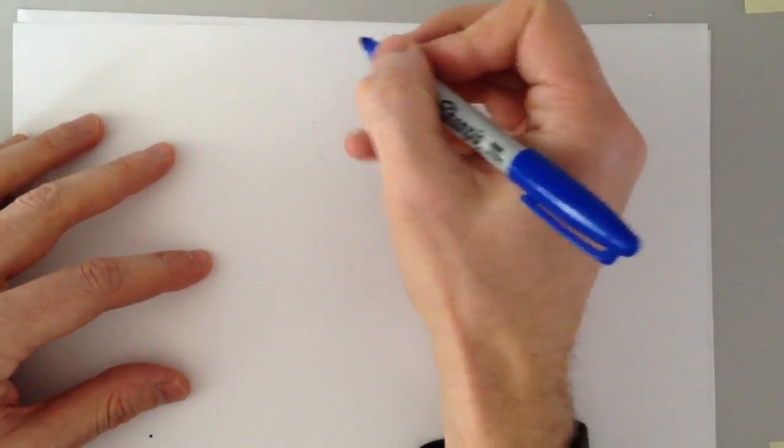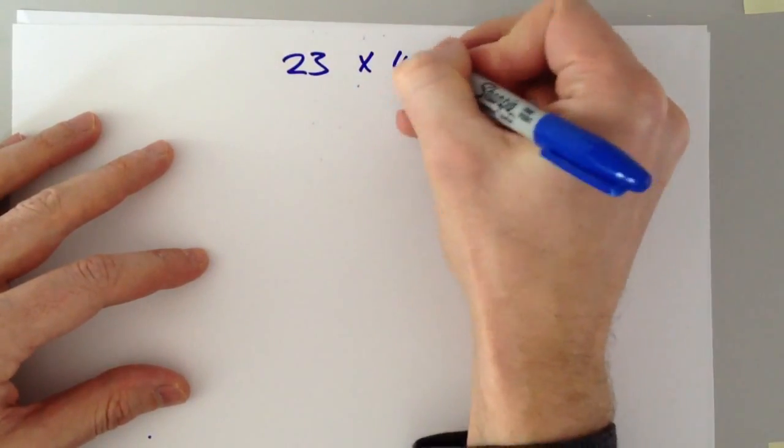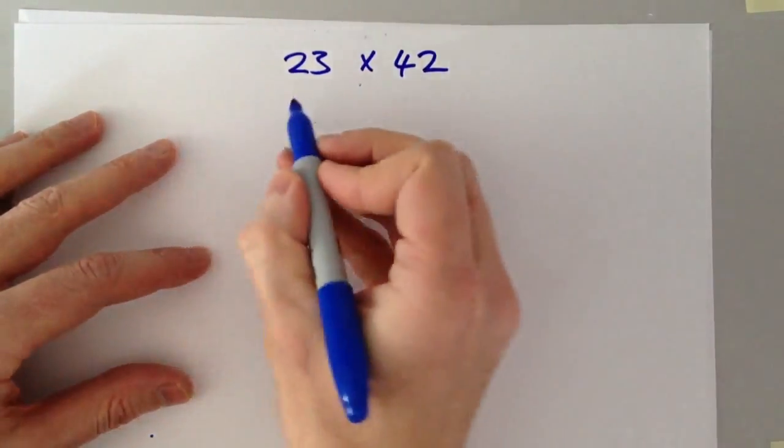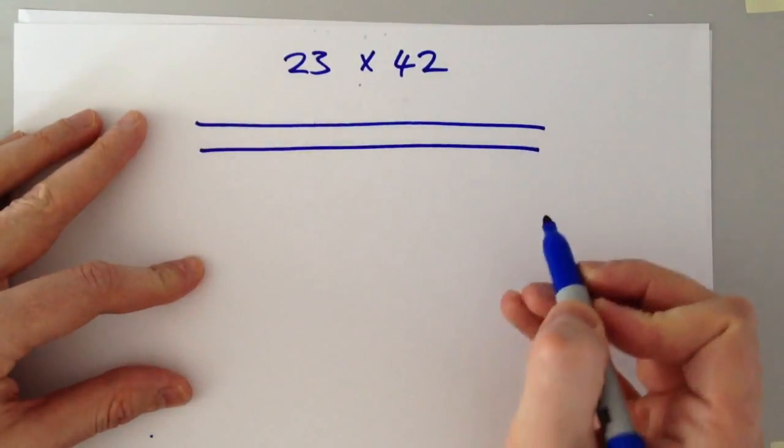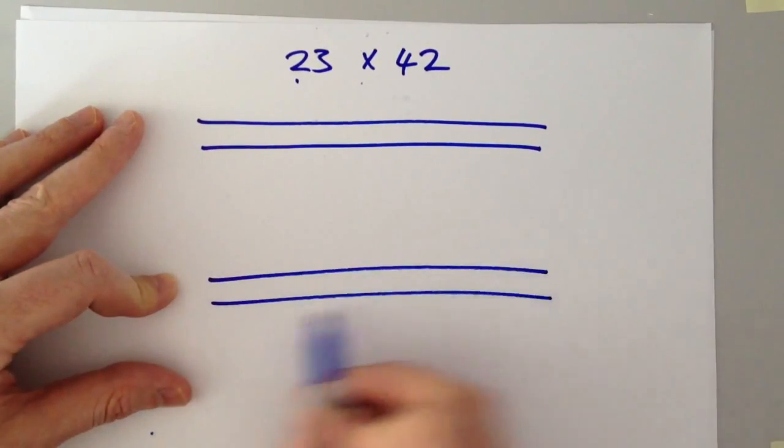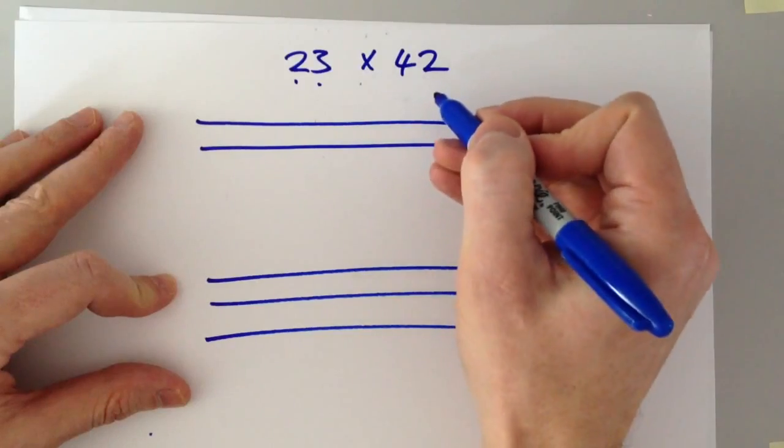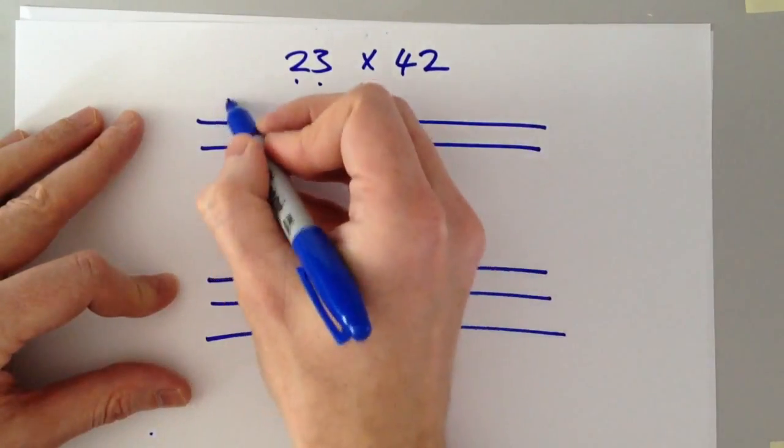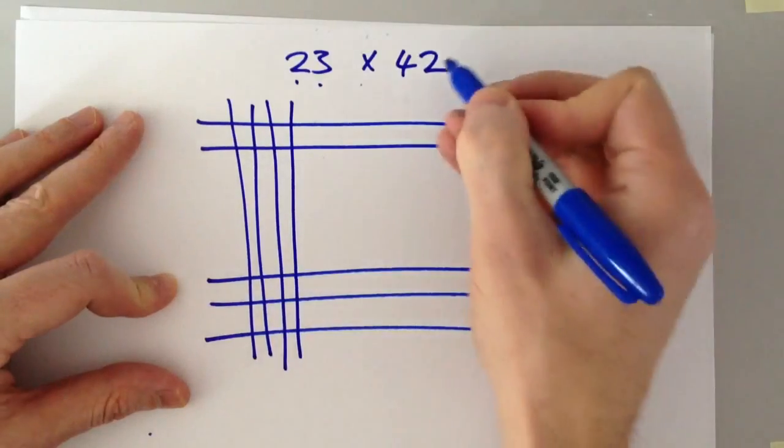Let's take two random numbers, 23 and 42. We take the two and draw two lines. Then we do another group of three. Then we do vertical lines for the second number. First a group of four, and then a group of two.